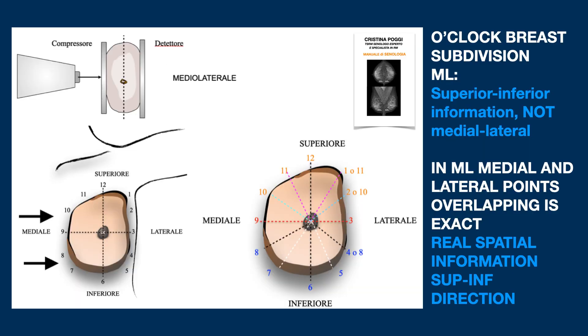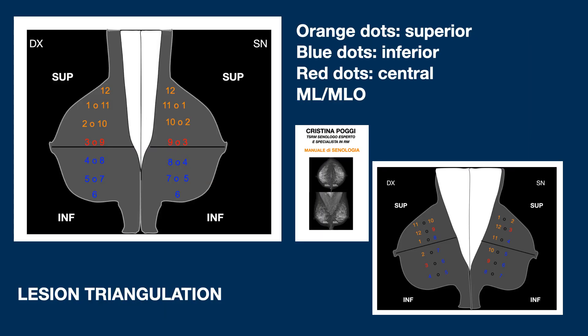This is why the lateral projection must be used to get real spatial information. Here again, as in the CC, the overlapping of the points is exact — this time, it is the medial and lateral points. This is the layout of the lateral projection; as you can see, it is much more understandable than that of the MLO projection.